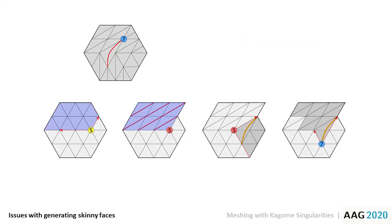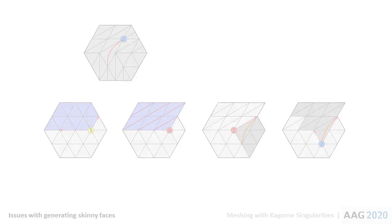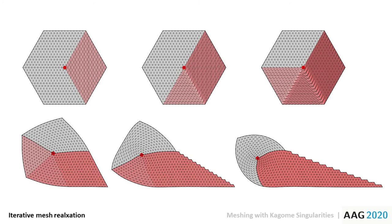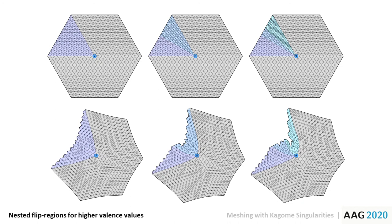Another challenge occurs in local regions where repeated edge flips occur. This can lead to skinny faces or overlapped edges. These issues can be mitigated by planning the sequence of singularity introductions, and by introducing them sequentially with an iterative mesh relaxation. This approach also allows for higher valence singularities to be achieved by iteratively flipping edges within the same flip region.